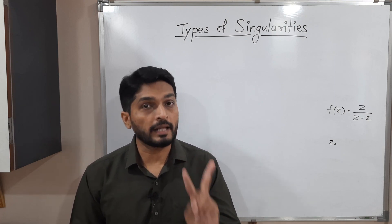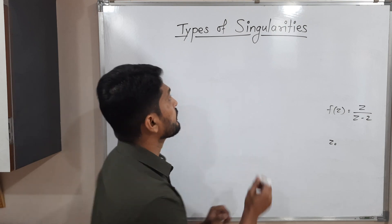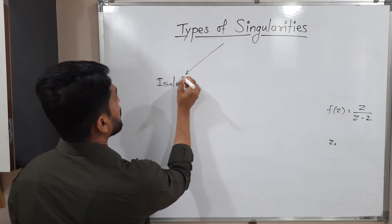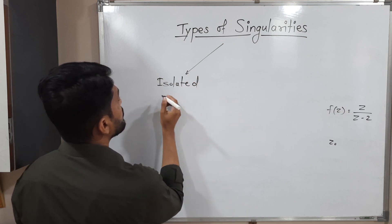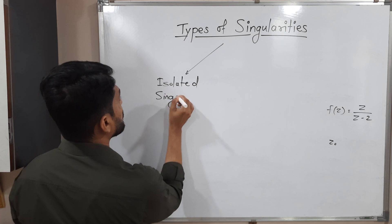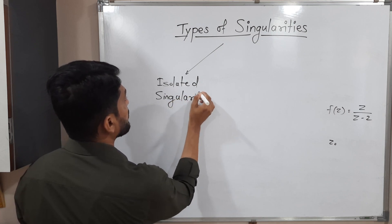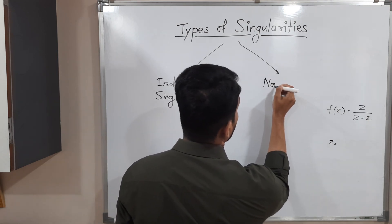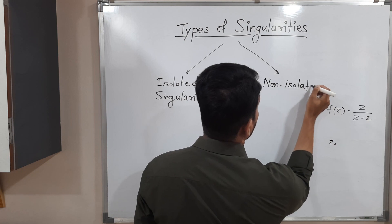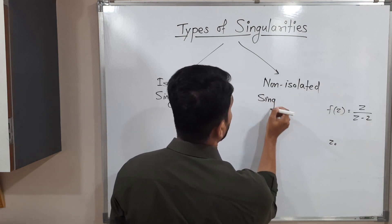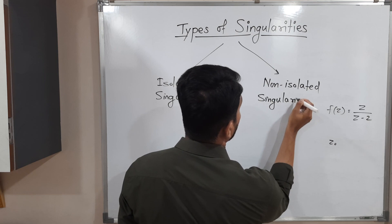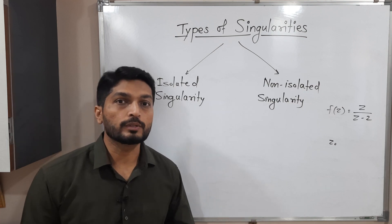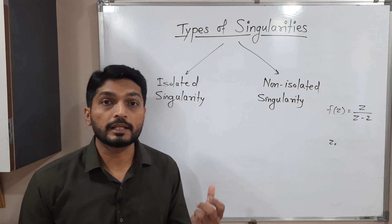In this video we will cover two main types of singularities. The first one is isolated singularity, and the second is non-isolated singularity. Let us discuss the difference between isolated singularity and non-isolated singularity and how to identify their types.